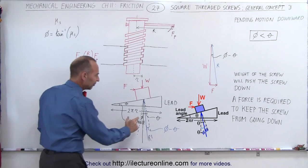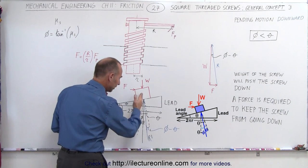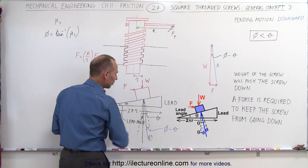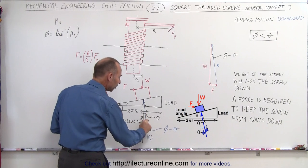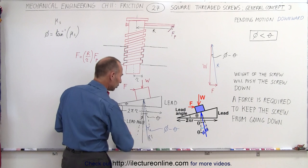Now notice if theta is the angle between the normal and the vertical, call that theta, it's the lead angle, and phi is smaller than that, then the angle between what we call...